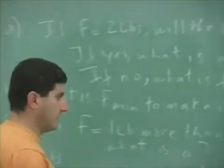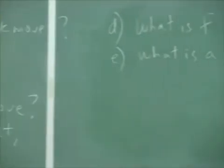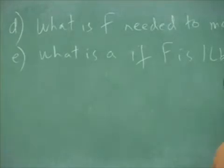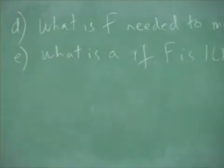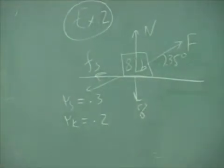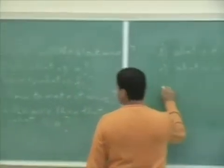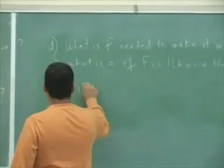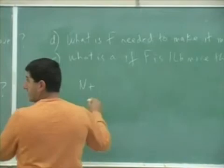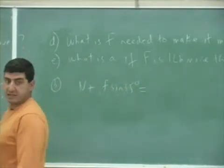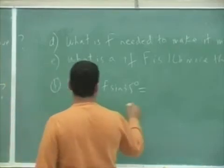So because a lot of people always, because N is so often equal to the weight, you get used to saying N equals MG. But it's not always equal to MG, see? So for this problem, we gotta erase this and we gotta set it up this way. I'm gonna do part B again here. N plus F sine 35, N plus F sine 35 equals eight.